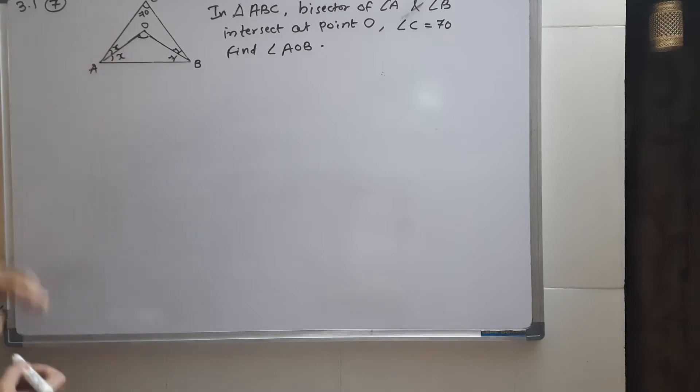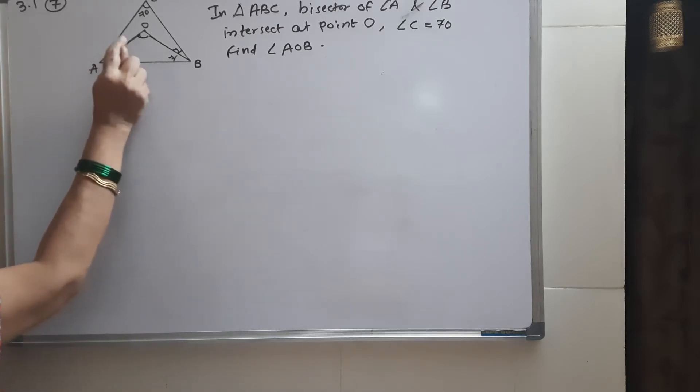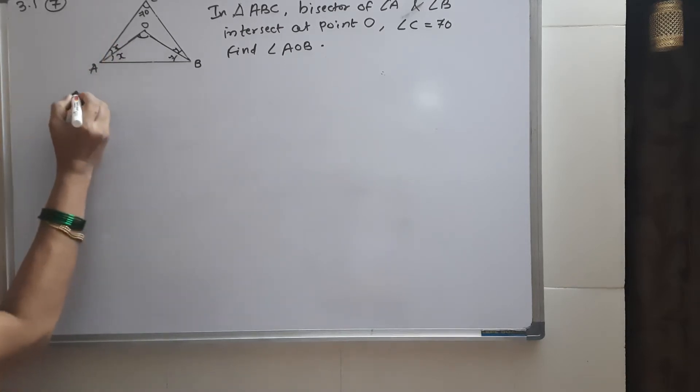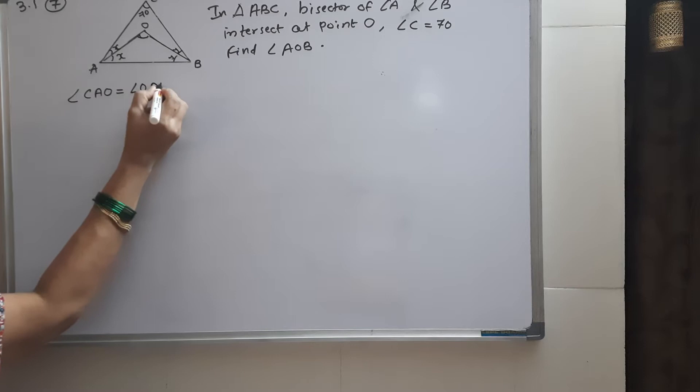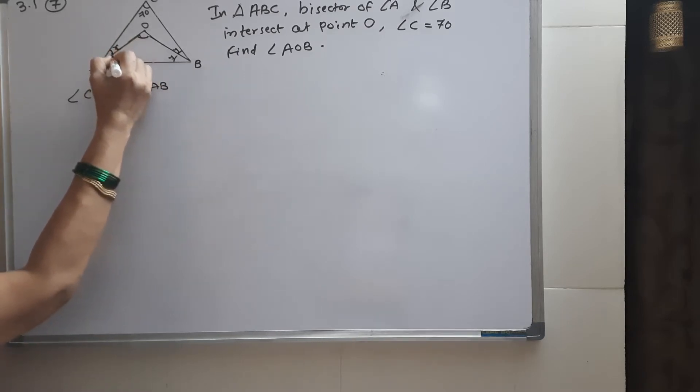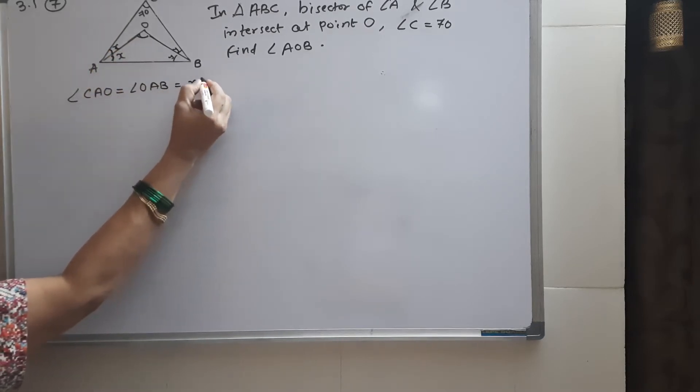If we bisect this angle, it divides into equal angles. For example, angle CAO is equal to angle OAB. Let's call these angles X.